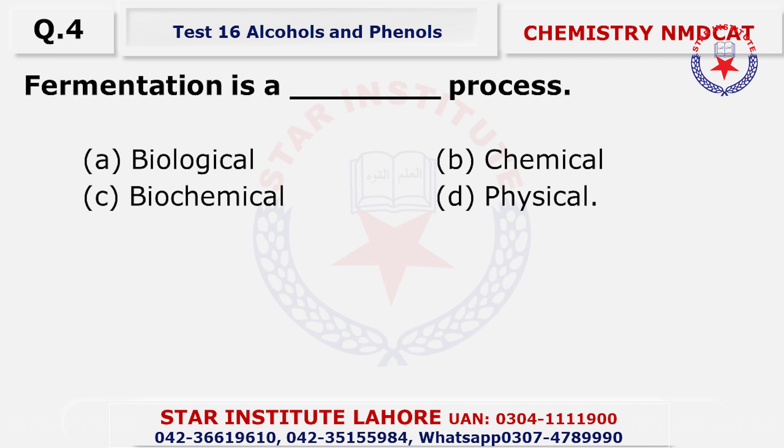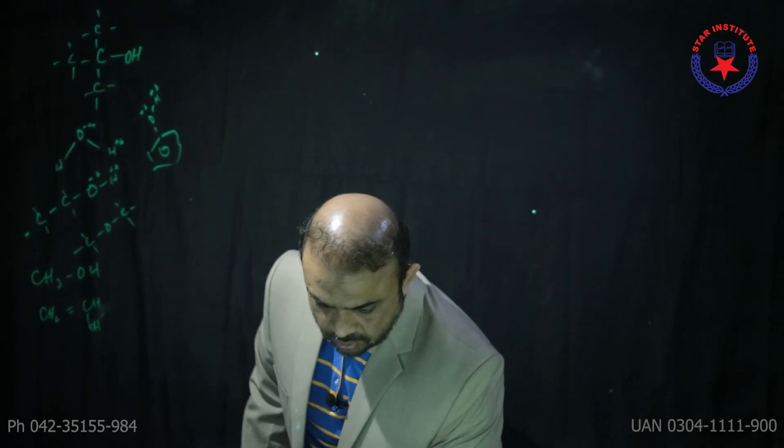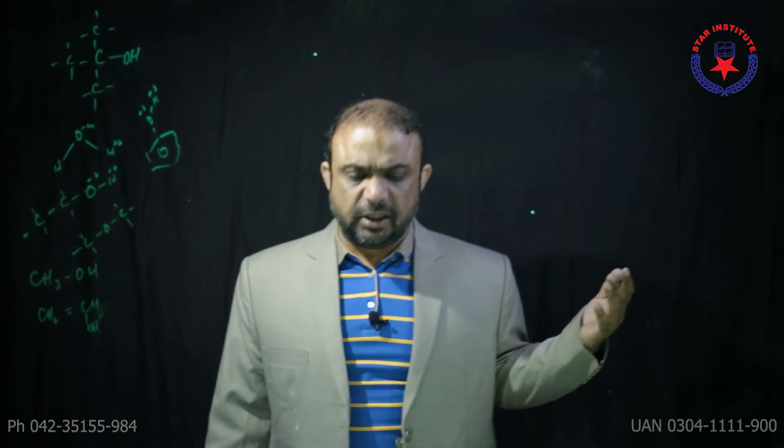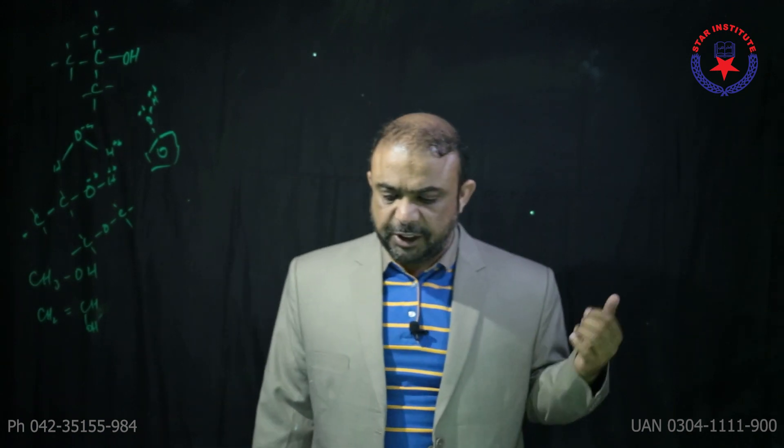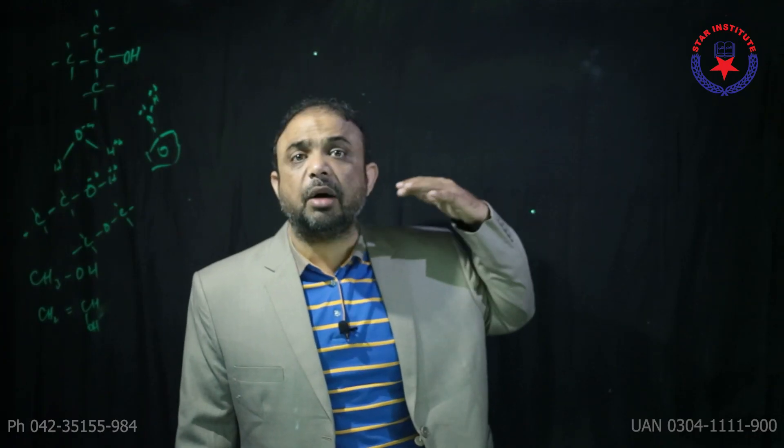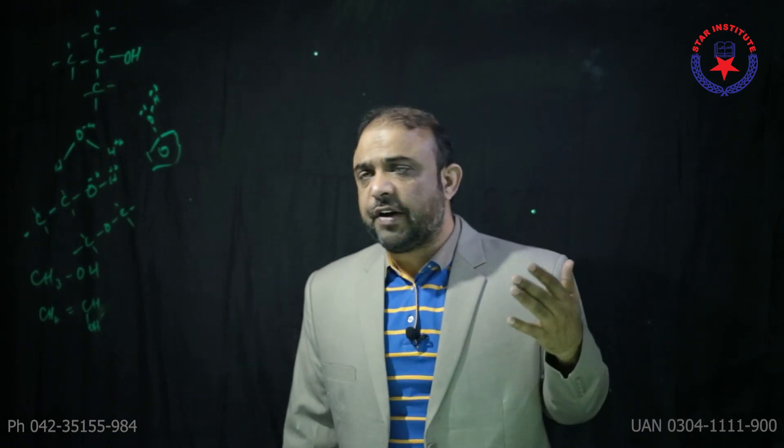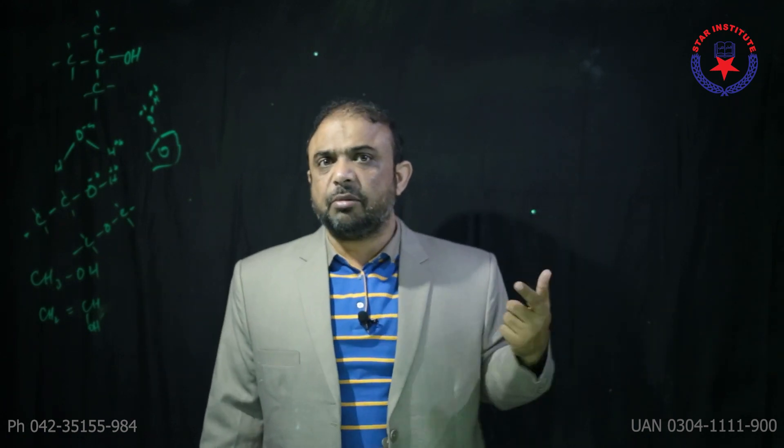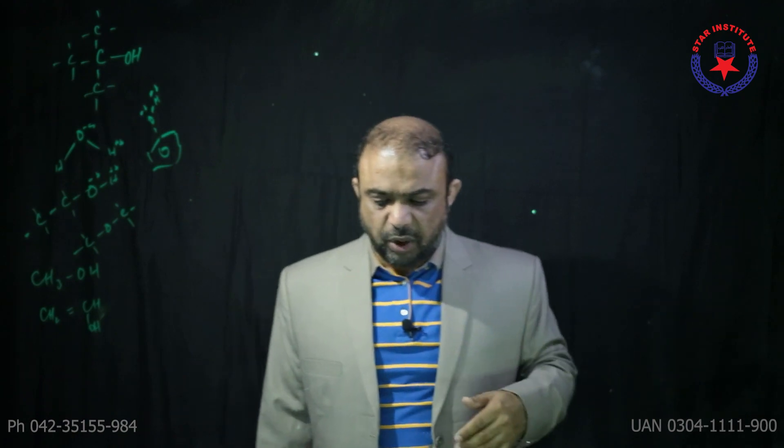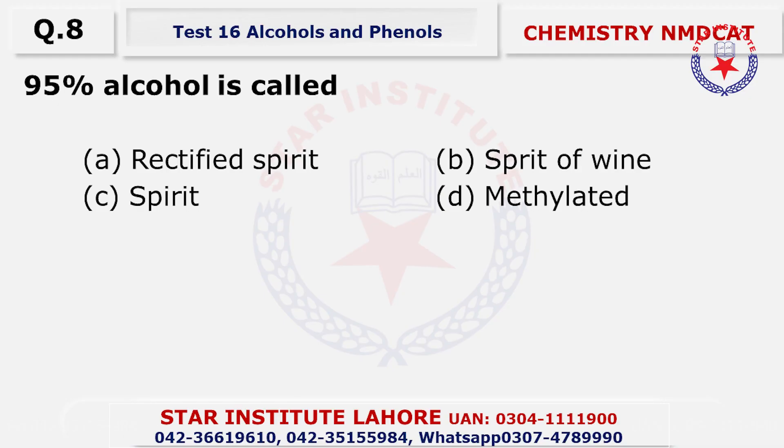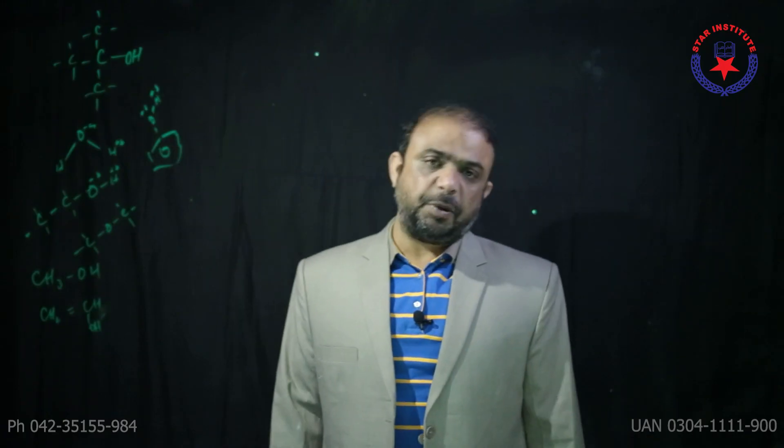Question four: fermentation is a biochemical process because we use yeast. Question five: to prepare ethanol by fermentation, the optimum temperature is 25 to 35 degrees Celsius. Question six: alcohol obtained by fermentation is up to 12 percent, and remember in nature its value never exceeds 14 percent.